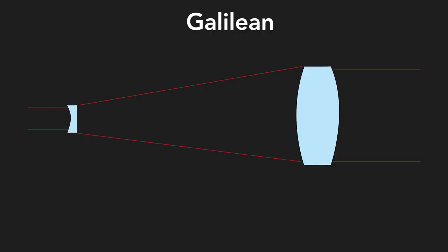Galilean beam expanders use a more compact design, featuring a concave lens followed by a convex lens, with the same spacing used in Keplerian designs. These are more compact because of the use of the concave lens, which has a negative focal length value. The sum of the focal lengths results in a shorter distance.